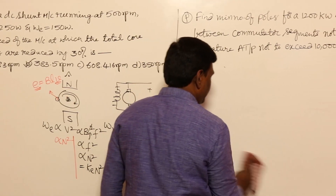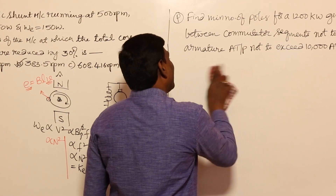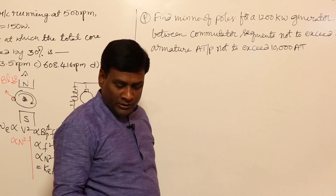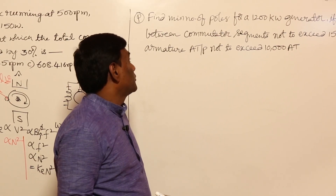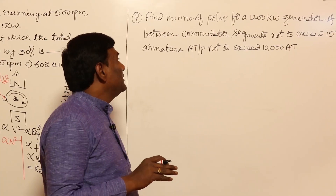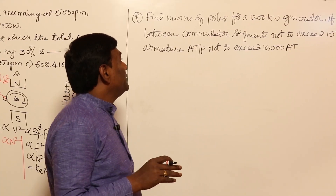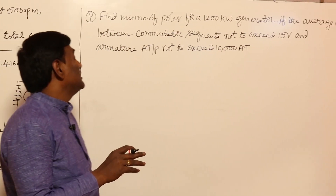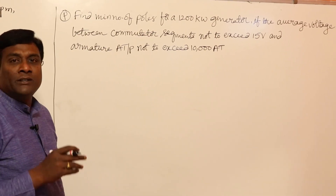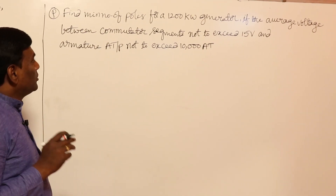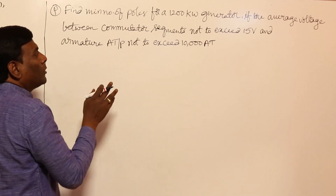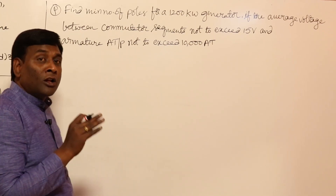Now let us look at another beautiful question from Parker Smith — a type not yet seen in GATE exams. Find the minimum number of poles for a 1200 kW generator if the average voltage between adjacent commutator segments is not to exceed 15 volts, and the armature ampere-turns per pole is not to exceed 10,000 ampere-turns.